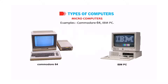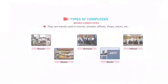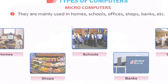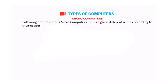Examples include Commodore 64 and IBM PC. Microcomputers are mainly used in homes, schools, offices, shops, banks, etc. Following are the various microcomputers that are given different names according to their usage.